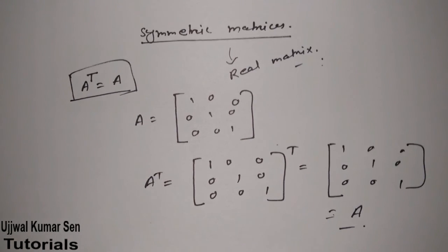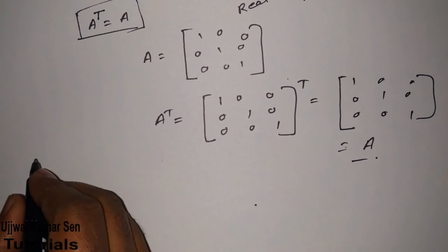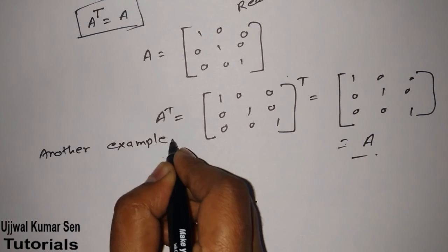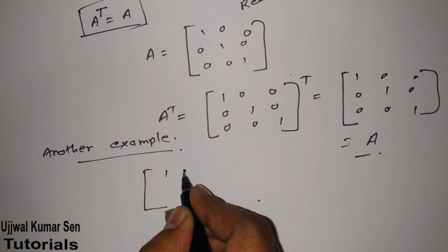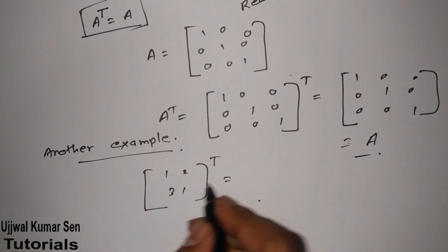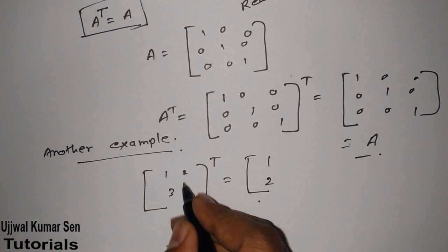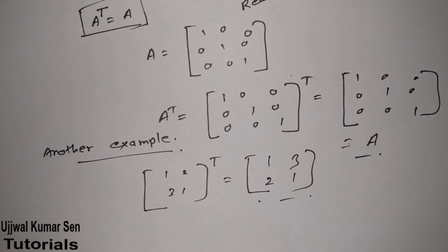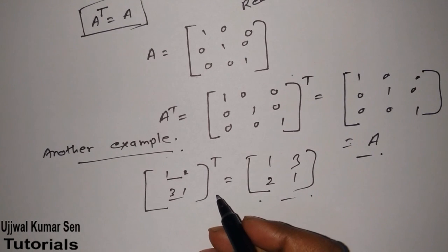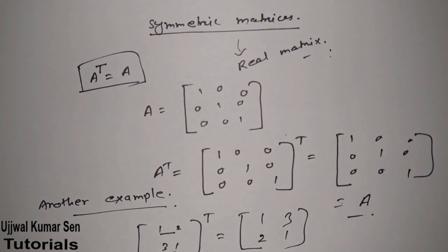Another example: suppose we have a matrix one, two, three / one. Its transpose would convert rows into columns. For a symmetric matrix, the transpose must equal the original matrix. This is all about symmetric matrices. I hope you understand this concept. Thanks for watching, see you soon in my next video.